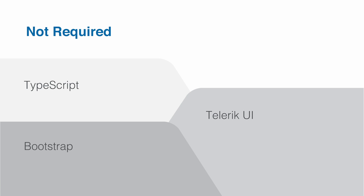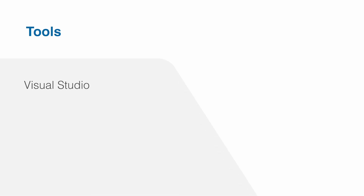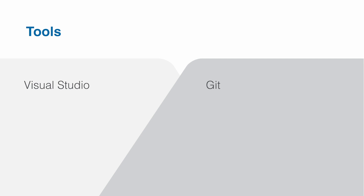The same goes for Bootstrap. While we're using Bootstrap for initial styling and layout, it's not required knowledge for this course. As far as the tools we'll be using, all the demos are demonstrated using Visual Studio Community Edition, which is a free tool available from Microsoft. Visual Studio Professional and Enterprise will work just as well. You may want to have Git set up and configured on your system so you can clone the demos. However, the code is hosted on GitHub, which also allows you to download a zip archive of the demo applications, so having Git is not a strict requirement.